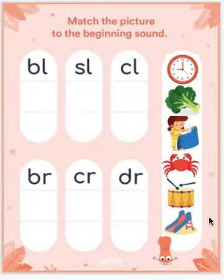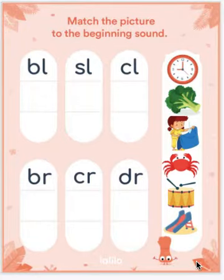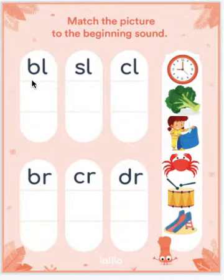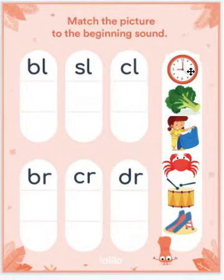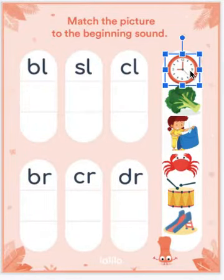That one's kind of fun to say. All right, so we have a bunch of pictures here. We're going to identify what each picture is of. We're going to say the word out loud and then we'll try to isolate what the consonant blend is at the beginning of the word. Okay, so we're going to start here with this one. This is a clock. Say clock.